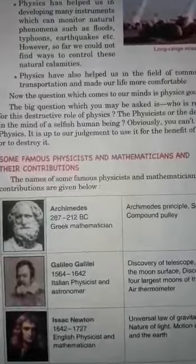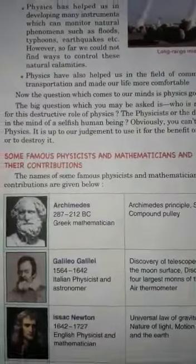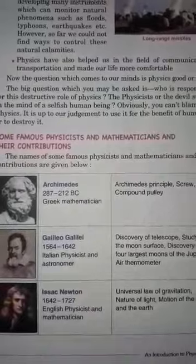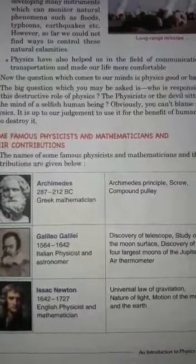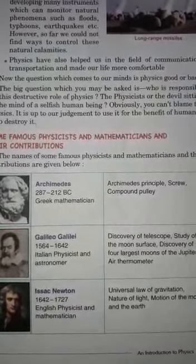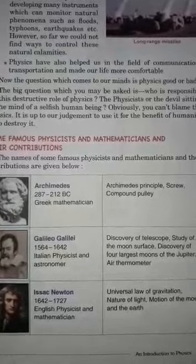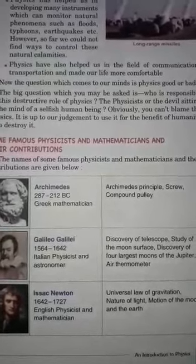Now we will discuss about some famous physicists. The first one is Archimedes. He was a Greek mathematician, and his inventions include the Archimedes principle, the Archimedes screw, and the compound pulley.